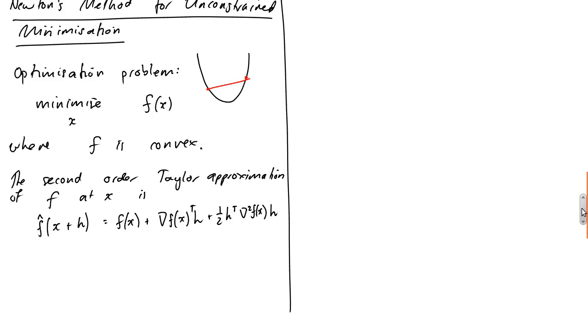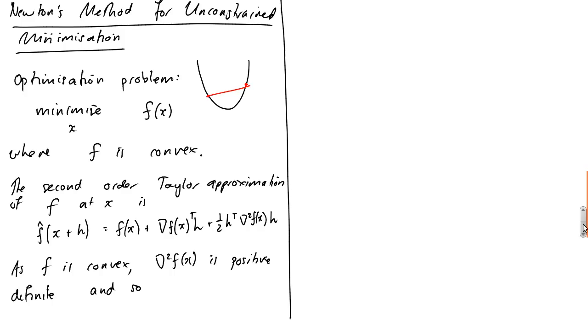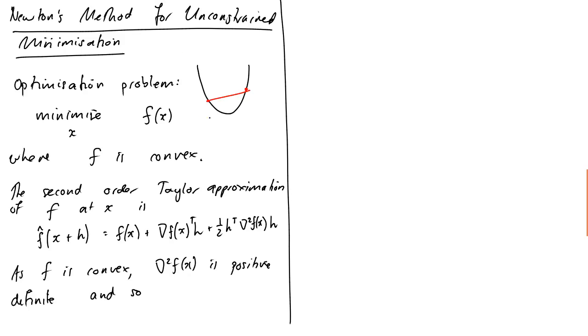Okay, so just remember that grad f is the gradient, grad squared f here is the hessian. Now what we know, as f is convex, our hessian is positive definite. Okay, and I might just start labeling some equation numbers here. Let's call this one equation one, and this one equation two.